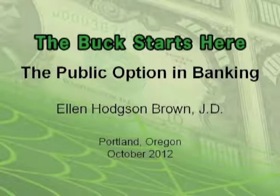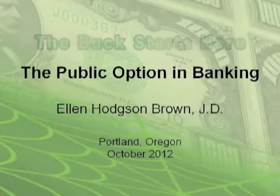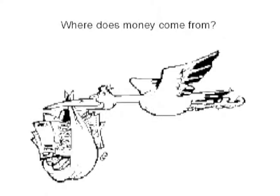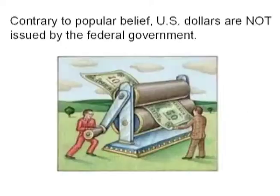I'm going to talk about the public option in banking. Where does money come from? Most people think it comes from the government. The only money that the government creates are coins, which compose about one ten-thousandth of the money supply.